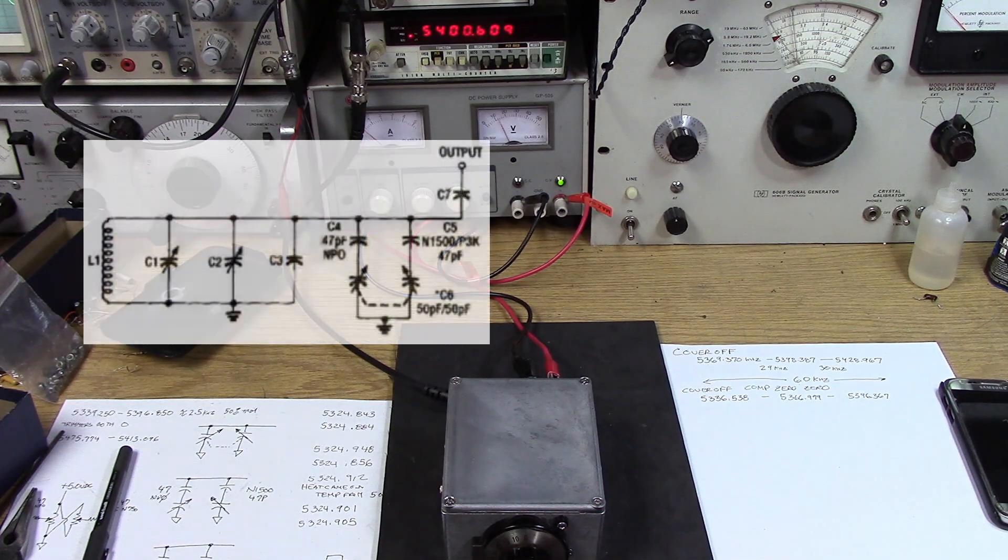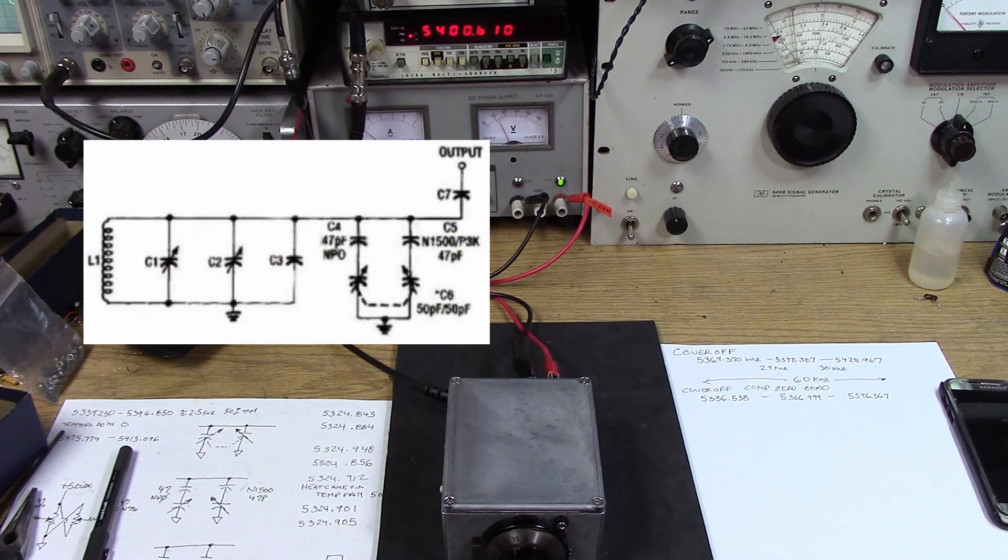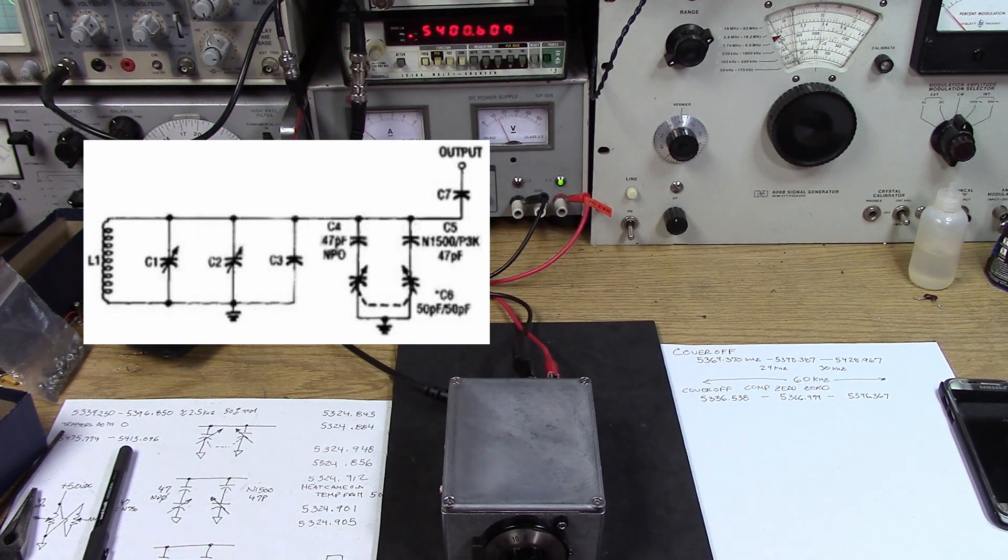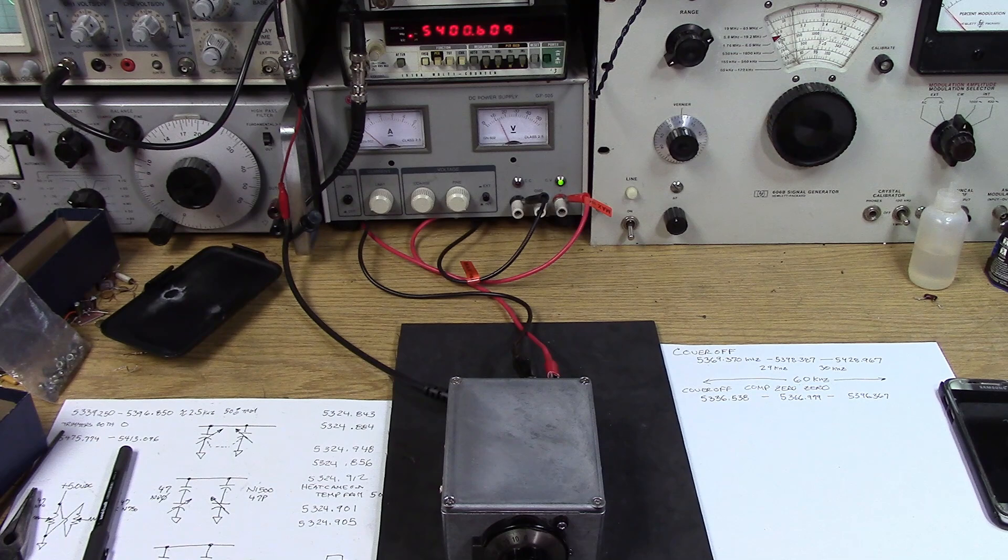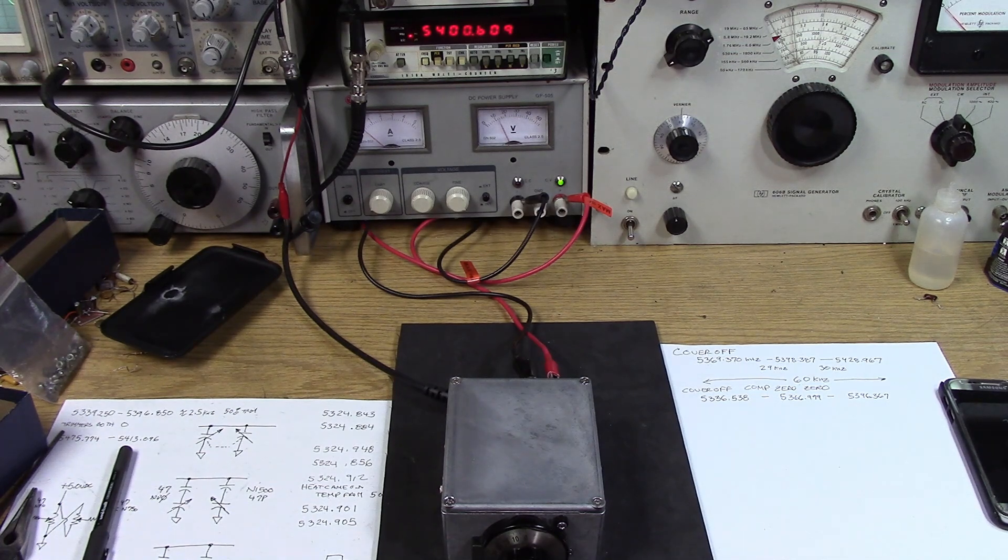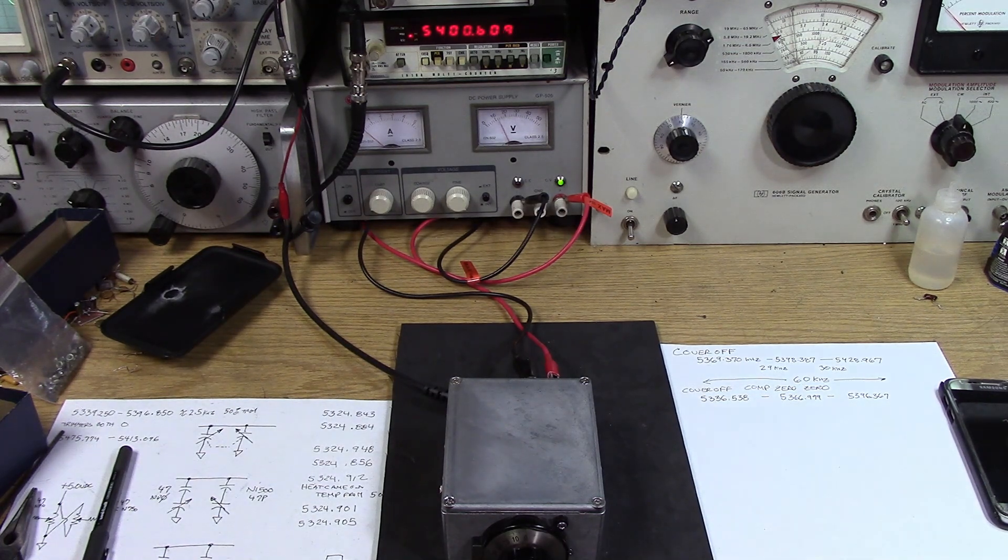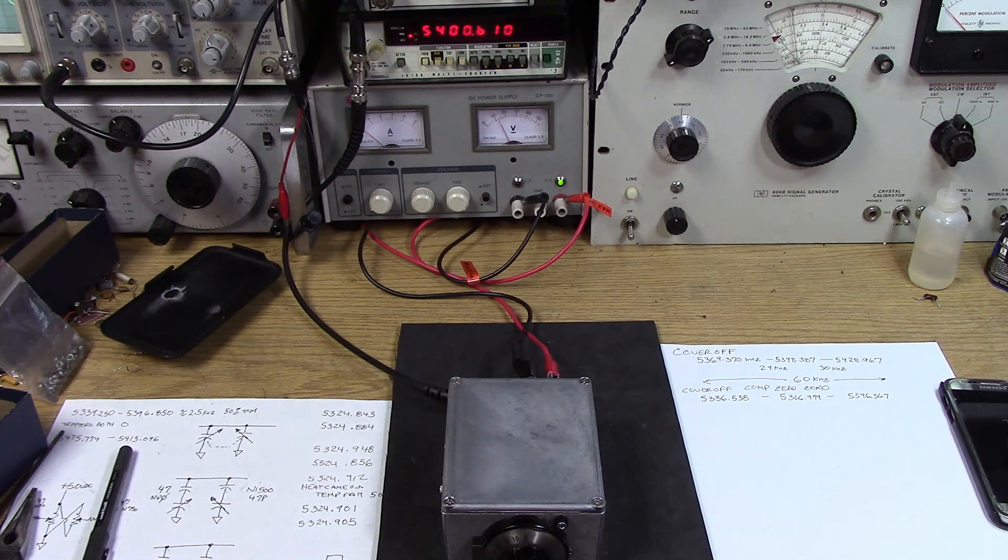So now I can adjust either one of those controls if this thing was to go unstable to try to correct it. From here on you really need an oven to do this correctly. Putting a heat gun on it and heating it up is such an uneven process that you really can't do much, but I know now that I'm going to be able to compensate this for different conditions quite easily.